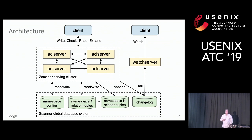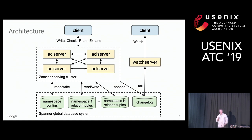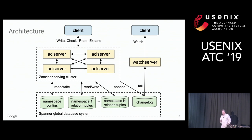All data is stored on the Spanner global database system. There is one database for namespace configurations — how clients configure namespaces and relations — one database per namespace to store relation tuples, and a changelog recording all changes across namespaces, used by the watch server.